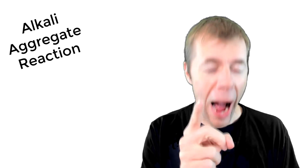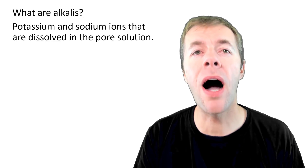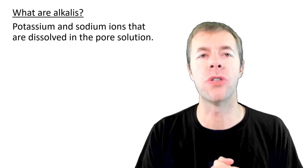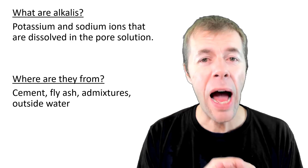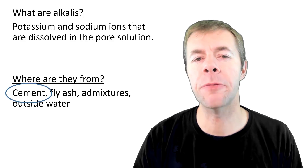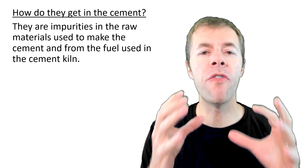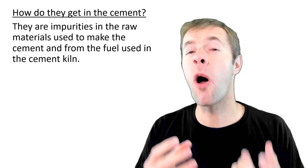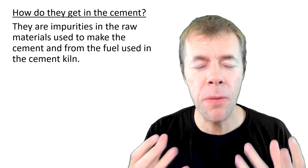Now, what causes this? Something called alkalis — remember, that's the first word in Alkali Aggregate Reaction, Alkali Silica Reaction, Alkali Carbonate Reaction. They're potassium or sodium ions dissolved in the pore solution. Where are they from? They could be from cement, fly ash, admixtures, or outside water, but mainly they're from your cement. They're impurities that go into the manufacturing of the cement itself — they can come from your raw materials or from the fuel used to make your cement. That flame inside the kiln can place alkalis in your cement clinker as you're manufacturing it.